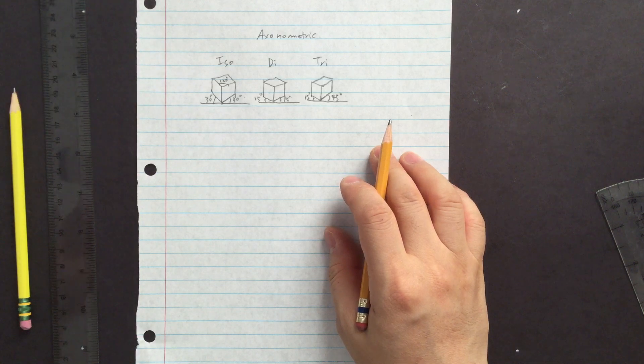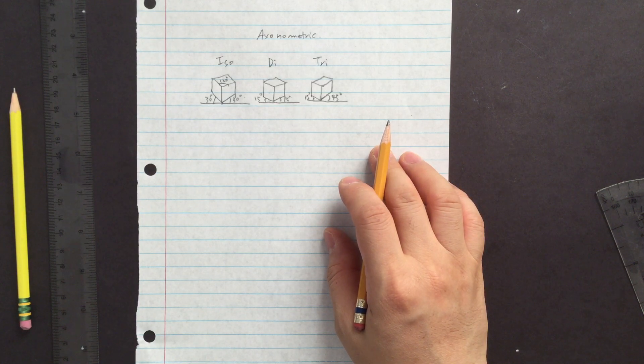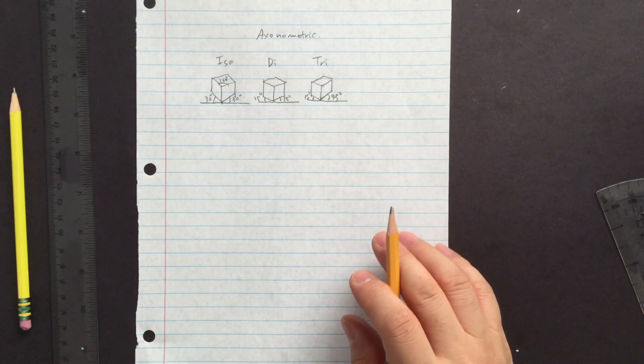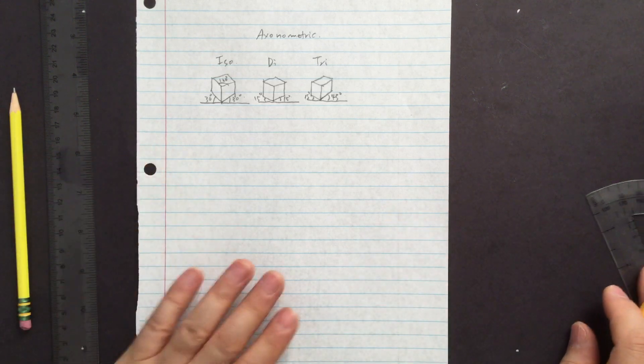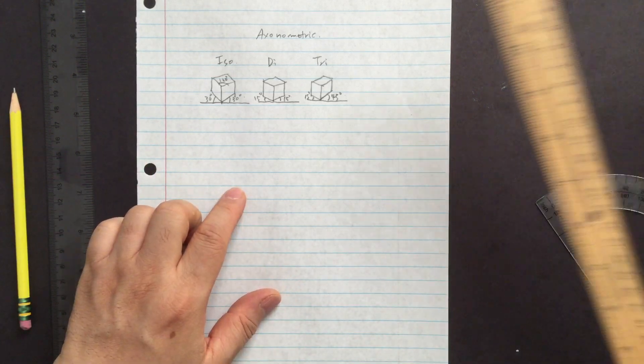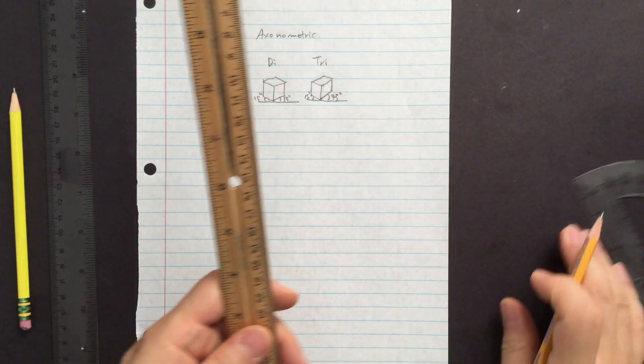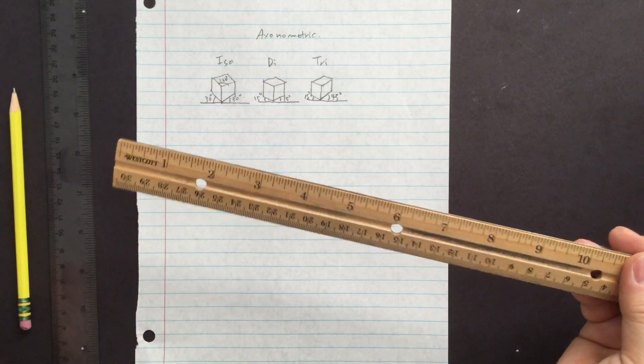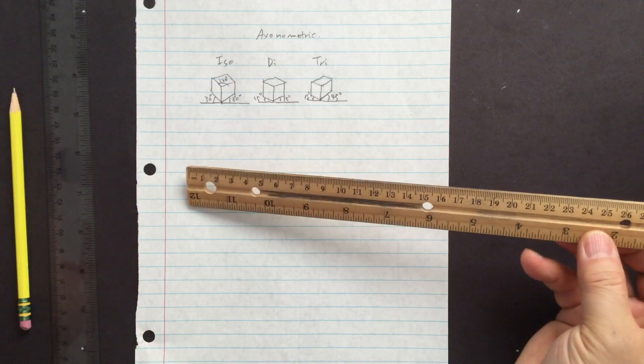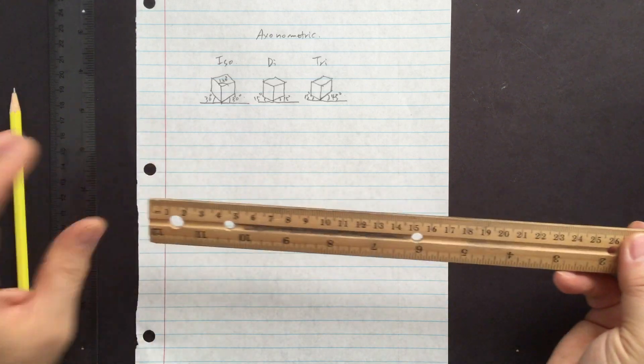So when you are creating the lines, there's an accurate way to measure it. For instance, if you want to make this 30 degree, remember we cannot use other mediums. So this is all we have. Clear ruler and this.